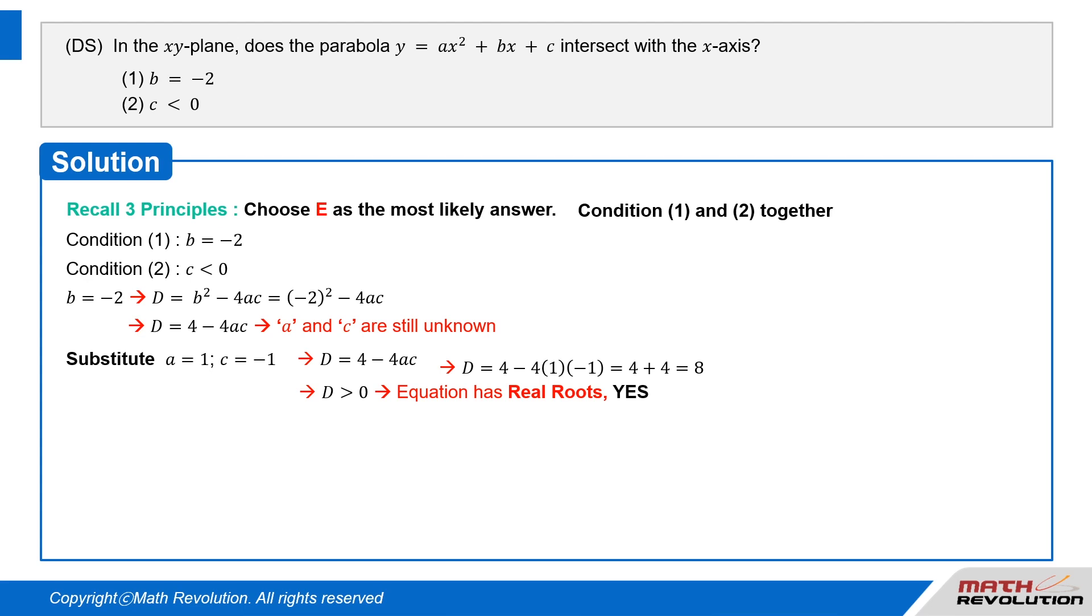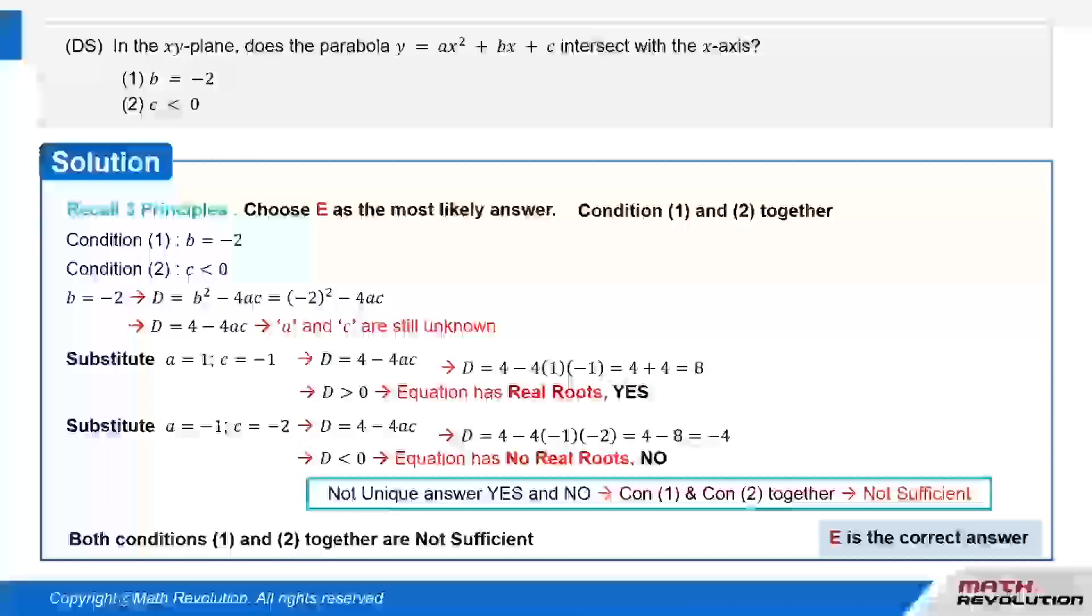If we substitute in a equals negative 1 and c equals negative 2, then we get d equals 4 minus 4 times negative 1 times negative 2 equals 4 minus 8, which equals negative 4 is less than zero. Because the discriminant is negative, the equation has no real roots or no answers and yes-no as an answer.